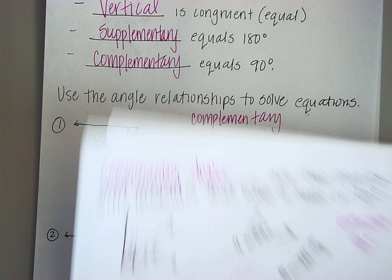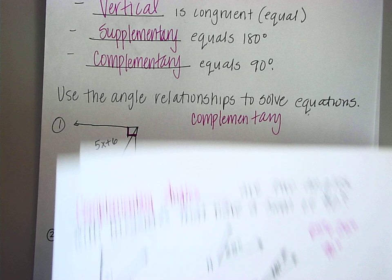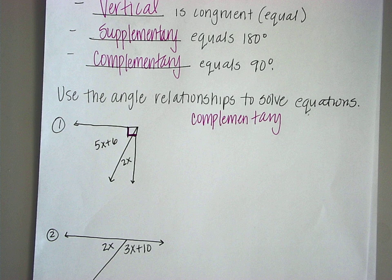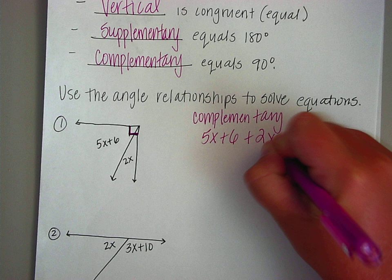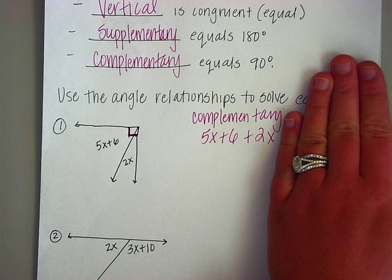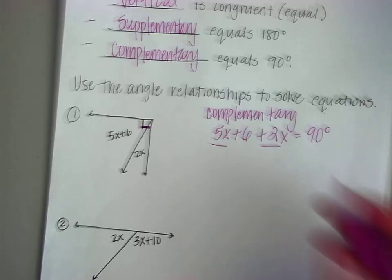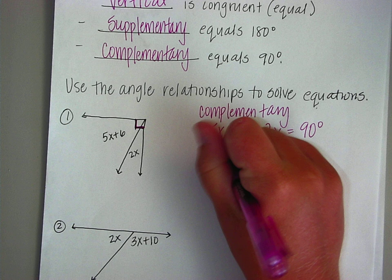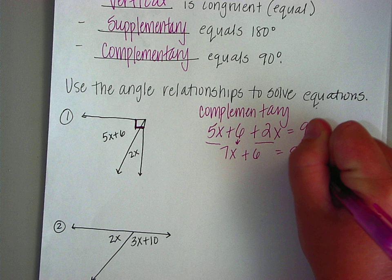Going back to the definition: complementary angles are two angles with measures that have a sum of 90 degrees. So these two angles have to have a sum of 90 degrees — sum means add. So 5x plus 6 plus 2x has to have a sum of 90 degrees. The first step when solving the equation is to add like terms. 5x plus 2x is 7x, plus 6 equals 90.